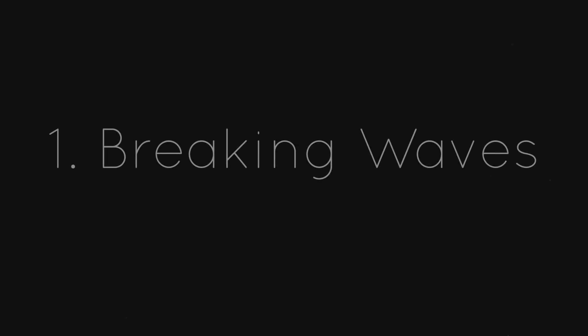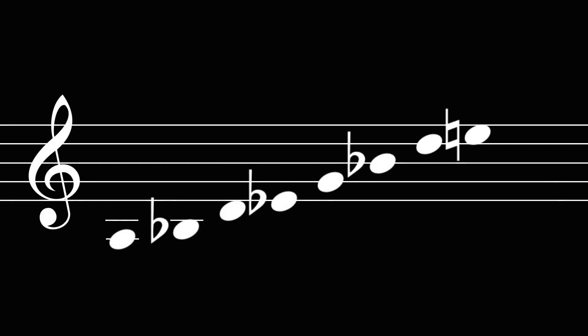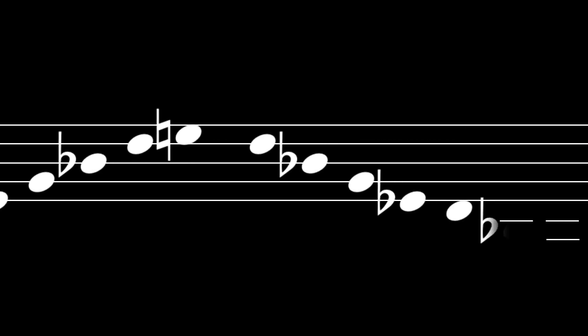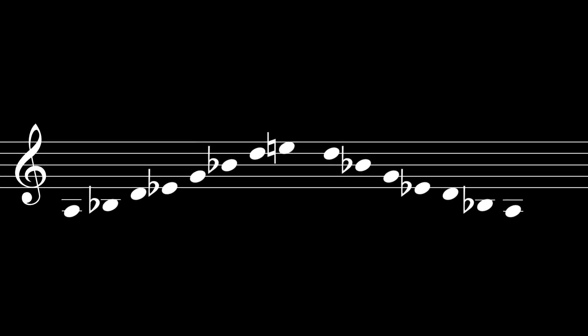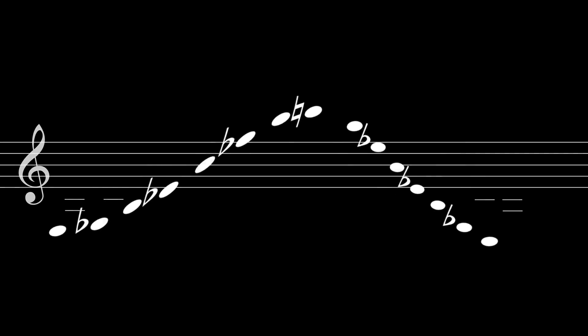One of the most prominent elements to define this soundtrack is the following sequence of notes: A, Bb, D, Eb, G, Bb, D, E natural. You can hear this sequence used to frame instrument parts, sometimes as a chord, and sometimes as a breaking wave of arpeggio. The sequence isn't in any particular key; it's focused more on intervals between the notes.